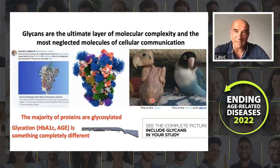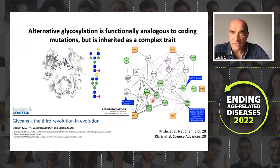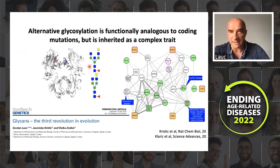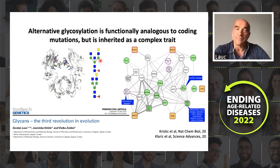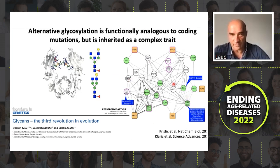One of the key aspects here is alternative glycosylation, which is adding different glycan structures to the same glycosylation site. Functionally, this is analogous to a coding mutation — a coding mutation will change an amino acid and produce a different protein, while alternative glycosylation will add a different glycan and produce a different protein structure. But contrary to mutations, which are inherited in a Mendelian way, glycosylation is inherited as a complex trait in a network of dozens or even hundreds of genes.